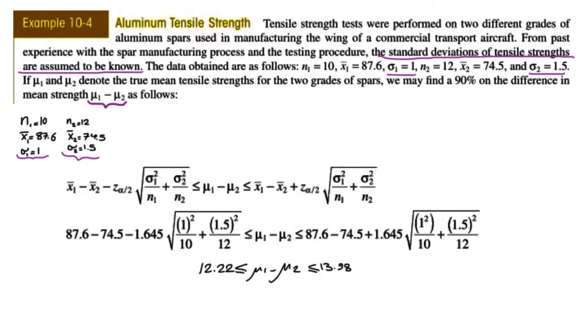Therefore, with 90% level of confidence, you can tell that the average difference between the strength of the two types of aluminum is not the same. Which one has a higher strength? You see that μ1 minus μ2 is falling between 12 to almost 14 units.